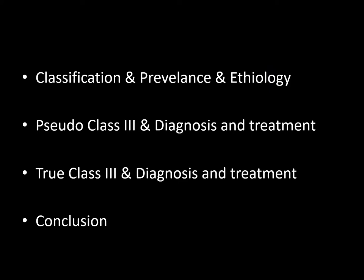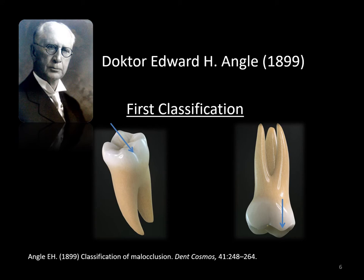In this webinar, we are going to have a quick overview on the classification and talk about the treatment modalities for different cases. In 1899, Dr. Edward Angle was the first to classify malocclusions into Class 1, Class 2, and Class 3 based on the relationship of the first molars. However, this classification reveals only dental information and the jaw relationship was neglected.